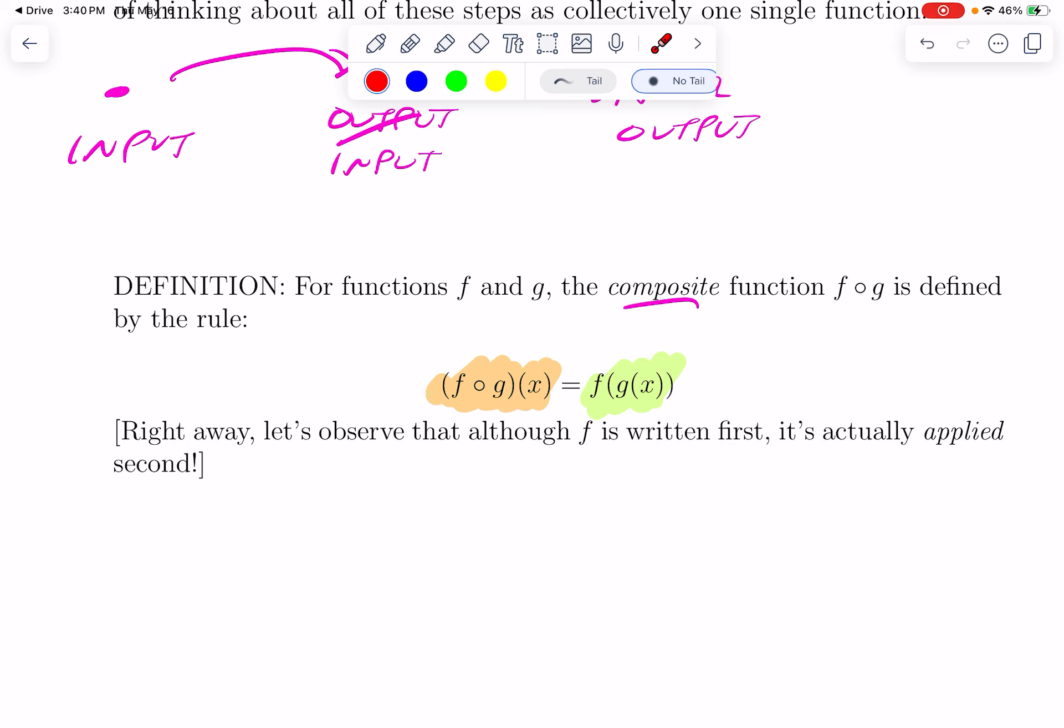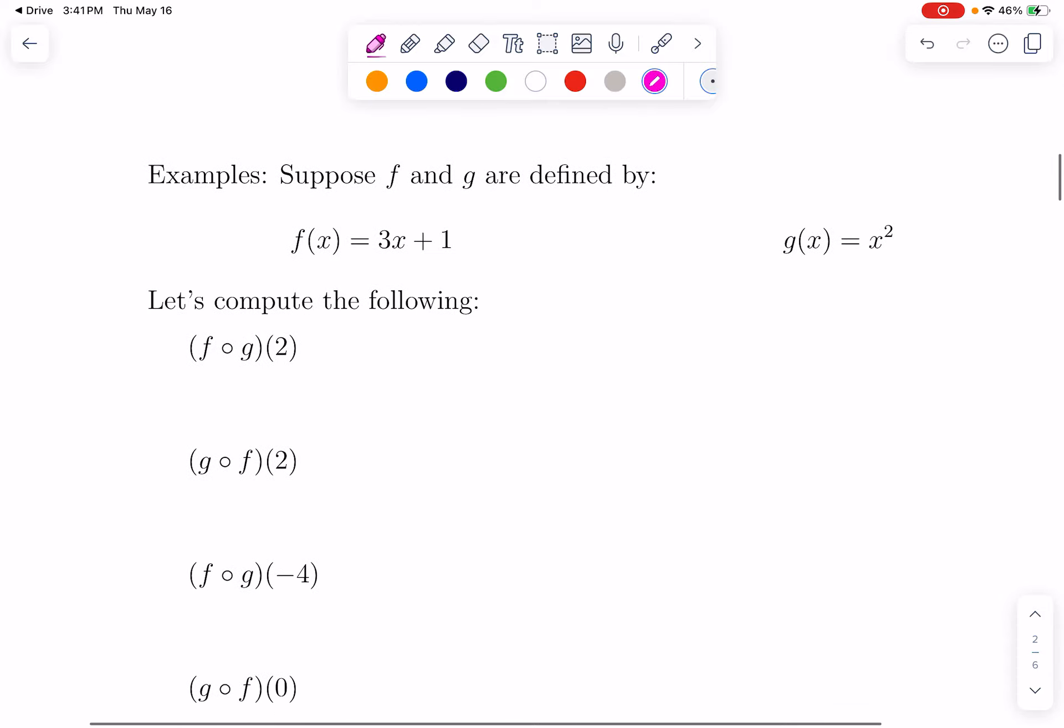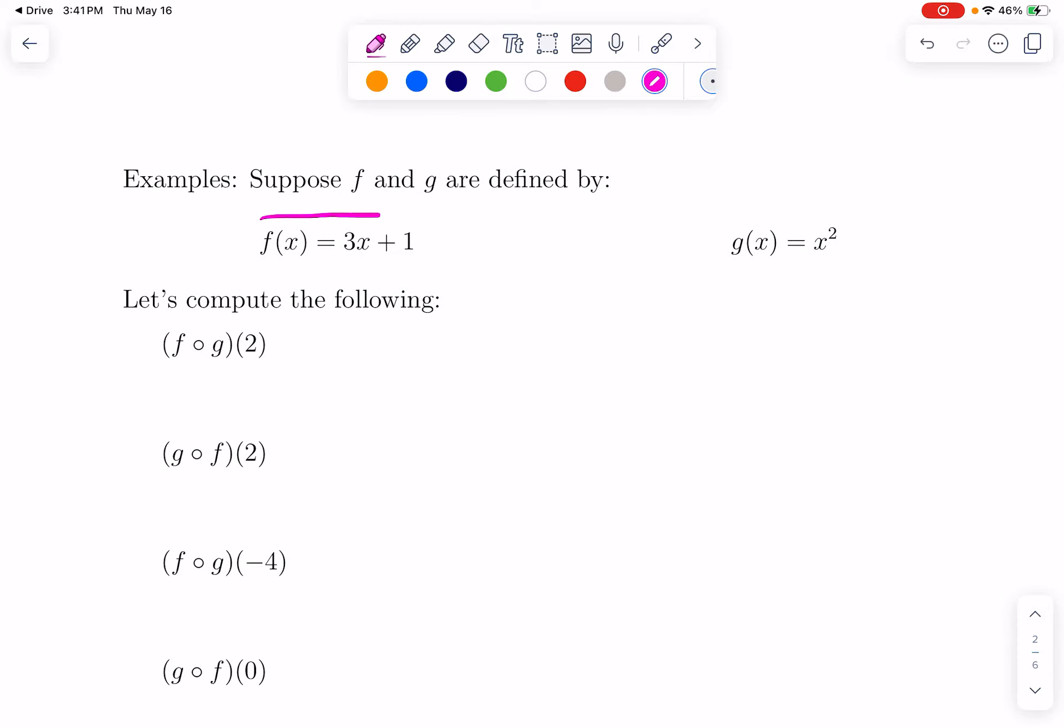So we would figure out G of X and then do F to it. One thing I want to point out is as we read this left to right, the F is first and the G is second. But since the G is inside these parentheses here, we actually think about applying G first.